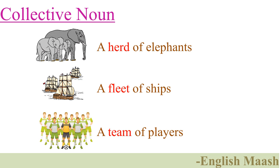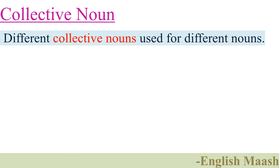The words highlighted in red color are collective nouns. A collective noun is the name given to a group of persons, animals, or things taken together as one. Different collective nouns are used for different nouns.